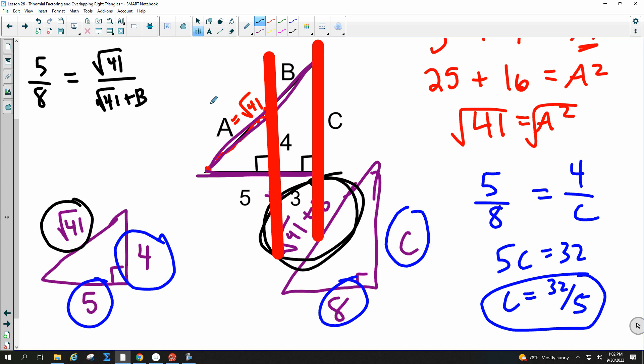5 over 3 equals the square root of 41 over B. That's the way I would do it. You can say this over this equals this over this. That's much easier. You cannot do that for the C side. How come you can't do that for the C side? It's like a whole side of the big triangle. There's no way to break it up at all. So you can only do it for the B side.